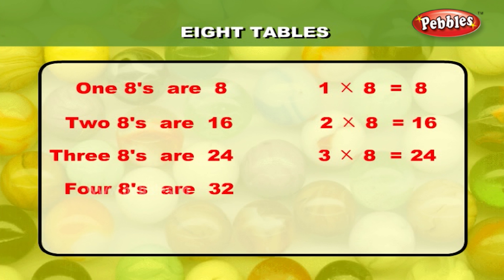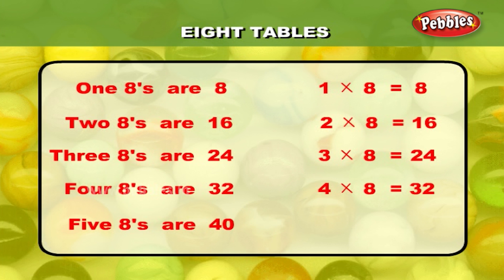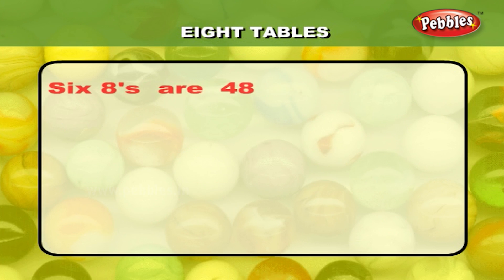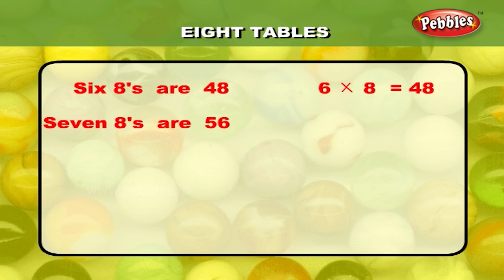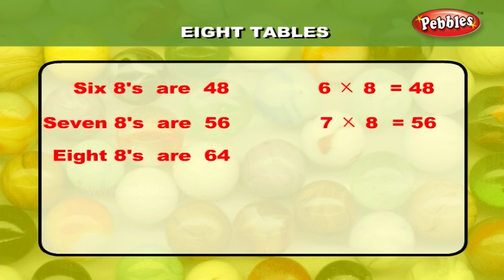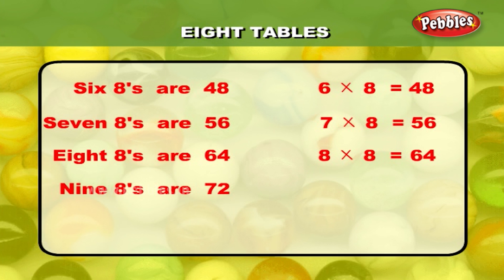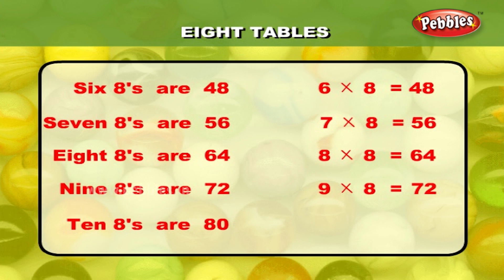8's table: 4 eights are 32; 4 into 8 is equal to 32. 5 eights are 40; 5 into 8 is equal to 40. 6 eights are 48; 6 into 8 is equal to 48. 7 eights are 56; 7 into 8 is equal to 56. 8 eights are 64; 8 into 8 is equal to 64. 9 eights are 72; 9 into 8 is equal to 72. 10 eights are 80; 10 into 8 is equal to 80.